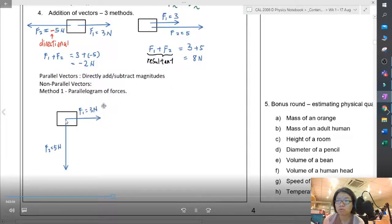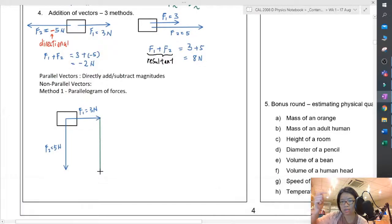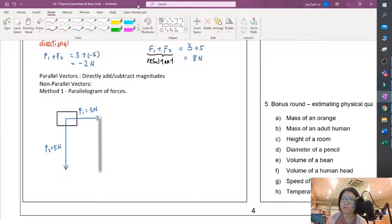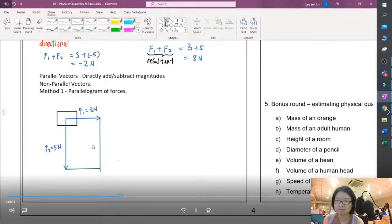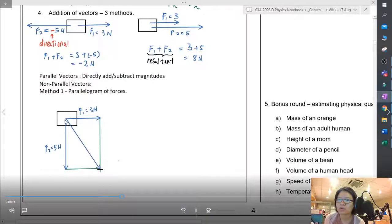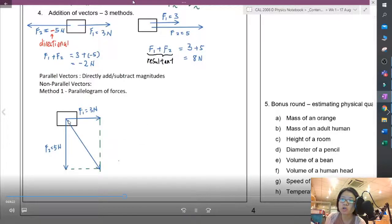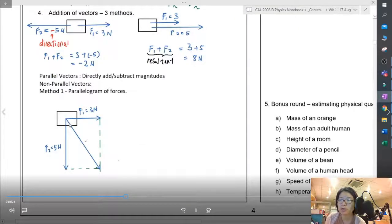There are a few methods to do this for non-parallel vectors. Your intuition will tell you that the result will pull somewhere in the lower right-hand side corner. First method, we can use the parallelogram of forces. I will build a parallelogram which coincidentally looks like a rectangle. When you join the vertice to the other end, you will get the resultant which is the middle arrow. Note that all three arrows originate from the same point. This will be F1 plus F2, this is the resultant, the one in the center.